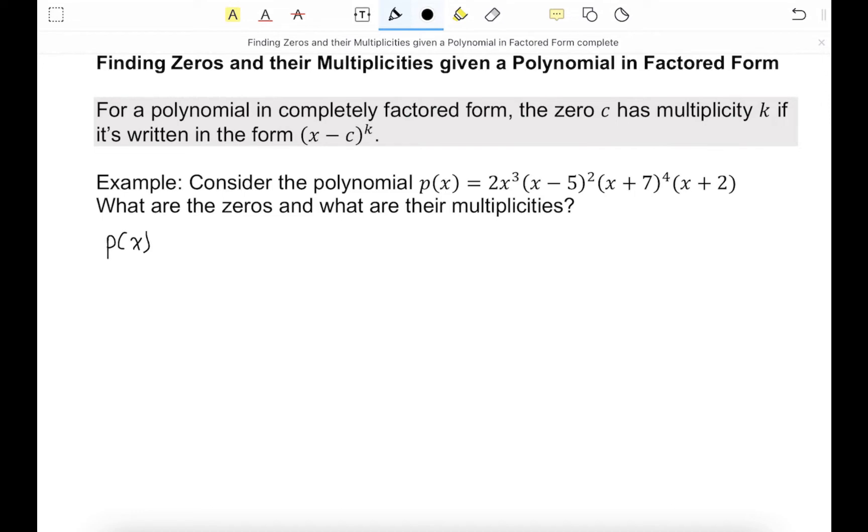So this one we can rewrite as 2. This x cubed, that's the same as x minus 0 cubed. The zero for x cubed is just 0.